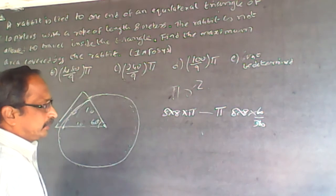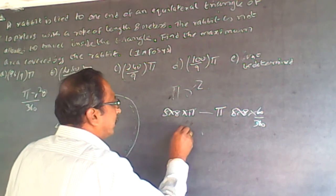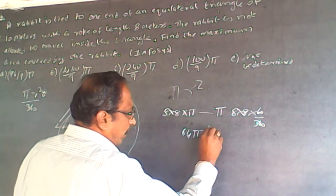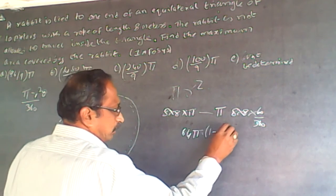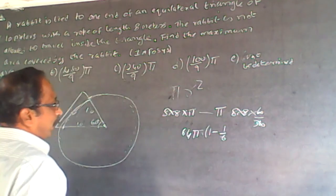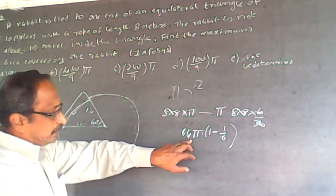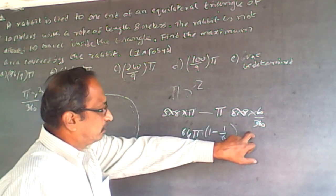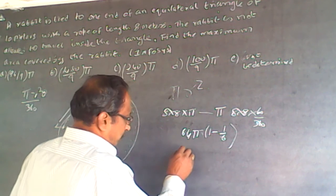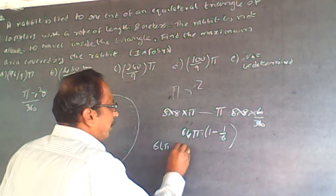So the area becomes 64π minus 64π × 60/360, which equals 64π × (1 − 1/6), since 60/360 = 1/6. This gives 64π × 5/6.